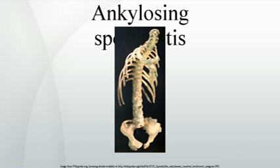AS is a form of spondyarthritis, a chronic inflammatory arthritis where immune mechanisms are thought to have a key role. It mainly affects joints in the spine and the sacroiliac joint in the pelvis, and can cause eventual fusion of the spine. Ankylosing spondylitis is a member of the group of spondyarthropathies with a strong genetic predisposition.